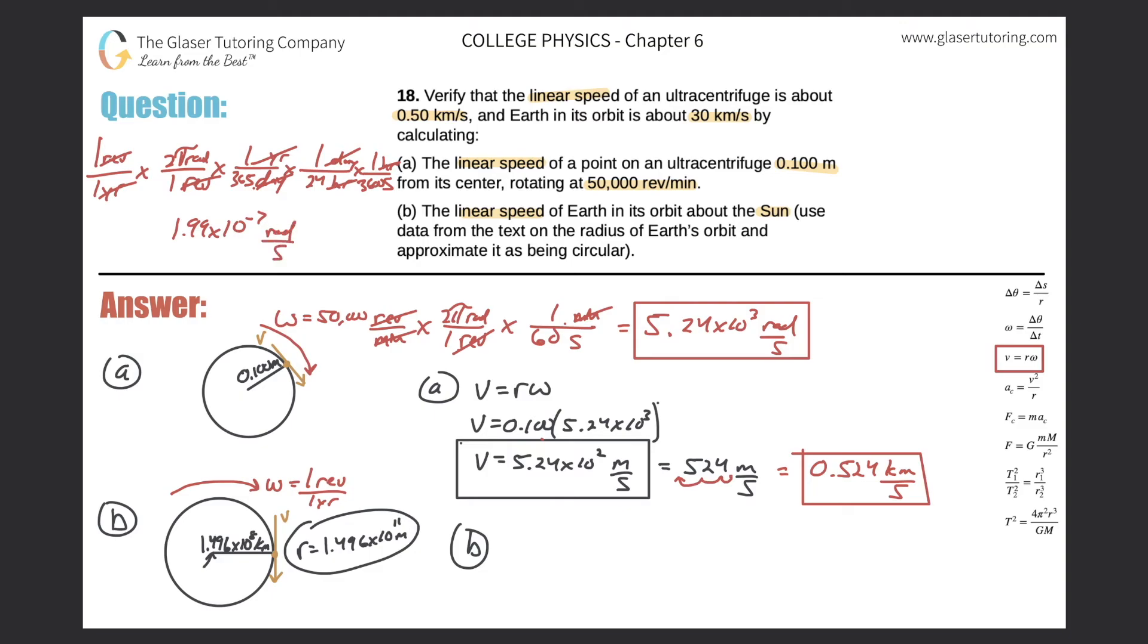Now we got enough to plug it all in. So V is equal to R omega. V is equal to 1.496 times 10 to the 11th, that's in meters, multiplied by the angular velocity here: 1.99 times 10 to the minus 7 radians per second. And what do we get when we plug it in?